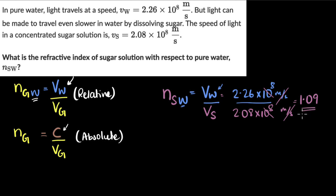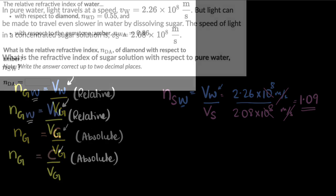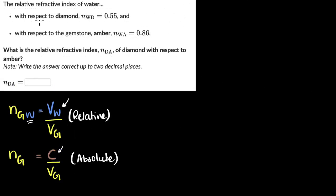So 1.09 is the refractive index of sugar solution with respect to water. It means that the velocity of light in sugar is 1.09 times slower compared to that of water. Now let's do a third problem. We are given the relative refractive index of water with respect to diamond, and also of water with respect to amber. We are asked to find the relative refractive index of diamond with respect to amber.